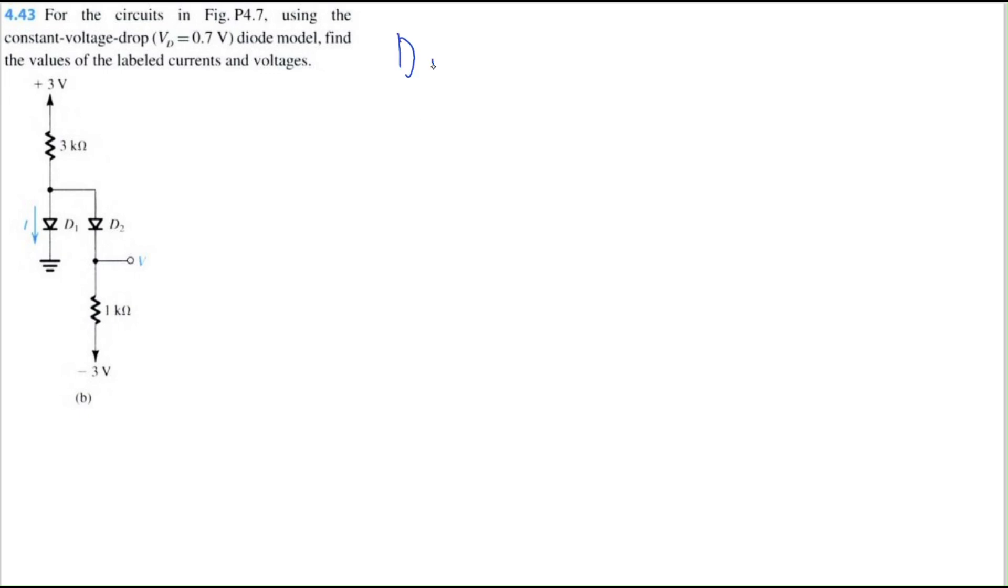Okay, let's solve for the second circuit, part B. Like always, we want to start by assuming if the diodes are on or off. So for the same reason as part A, we're going to say D2 is on because it's connected from this 3 volt to negative 3 volt.